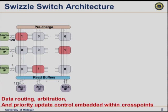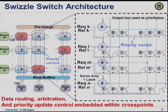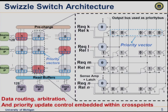Zooming in on one particular output column: we're also keeping track of priorities using least recently granted. At each cross point — for example, request K — it stores a zero for the data and a set of bit vectors designating priority. Any time you have a one, that gives you priority over somebody else. The request with the highest priority in this example is request M, because all bits in its priority vector are one. The request with the least priority is request K, because all its bits are zero.